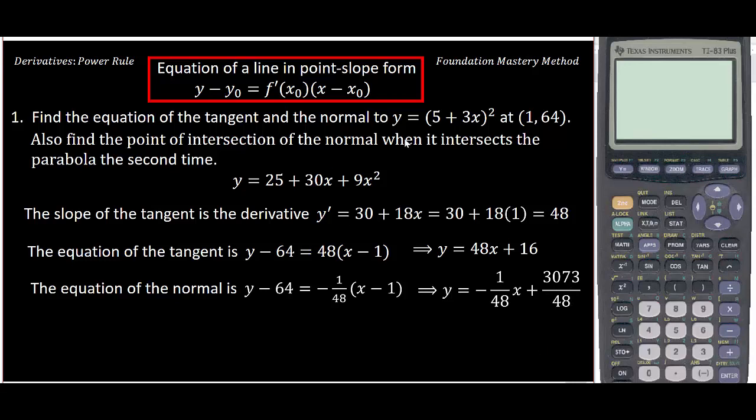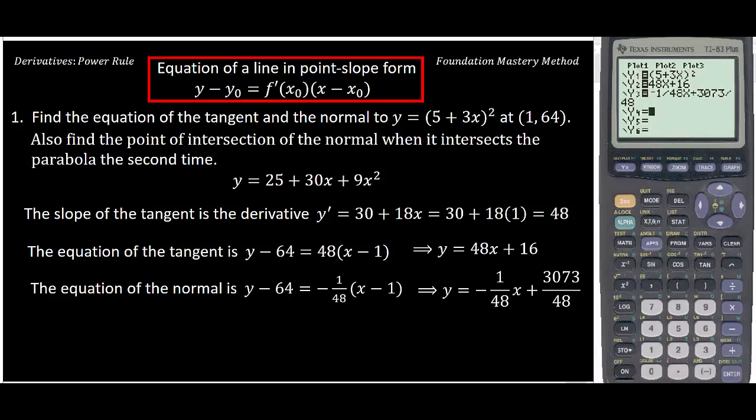Now we have the remaining part: when the normal is intersecting the parabola the second time, what is that point? I will do this in the calculator. I type the function, then my tangent line y = 48x + 16, and my normal is -1/48x + 3073/48. First look at the graph.